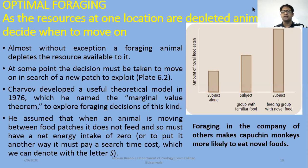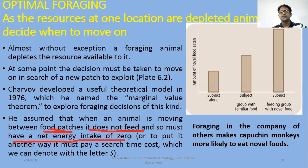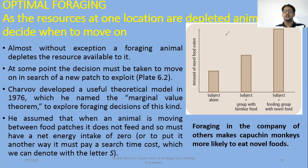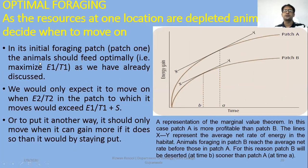He assumed that when an animal is moving between food patches it does not feed, and so must have a net energy intake of zero during movement. To put it another way, it must pay a search time cost, denoted with the letter S. Animals who have more food within groups are usually feeding, and their migration and locations change within groups between patches.